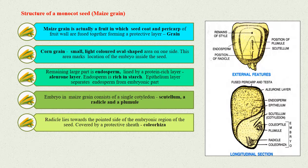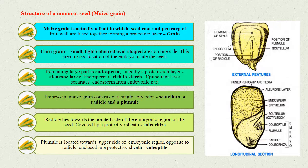It is covered by a protective sheath called coleorhiza. The plumule is located towards the upper side of the embryonic region opposite to the radicle. It is also enclosed in a protective sheath known as coleoptile.